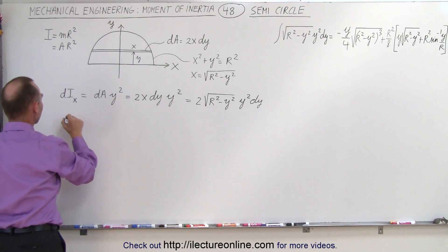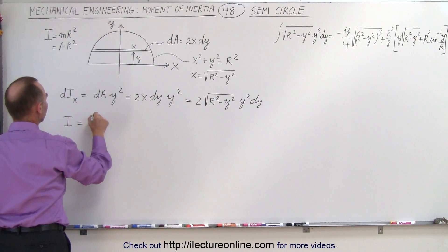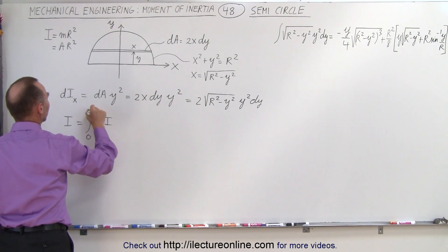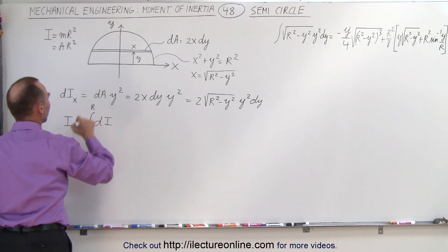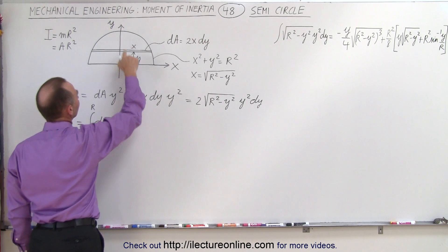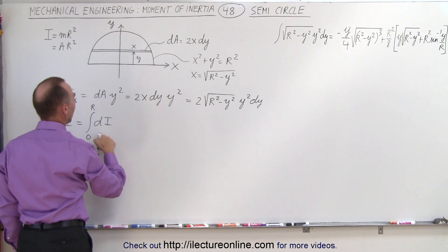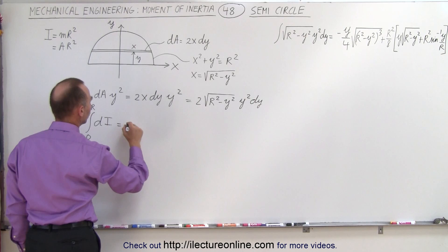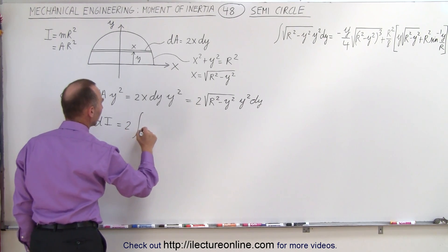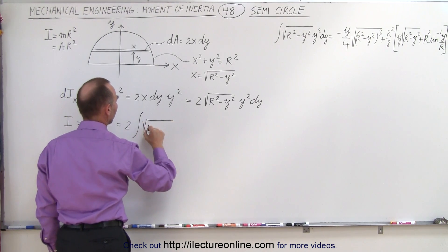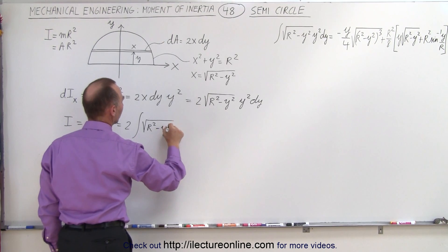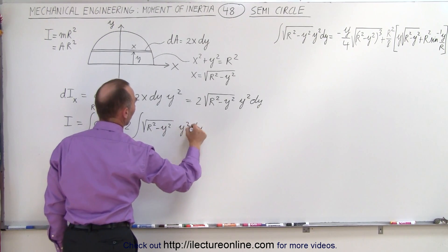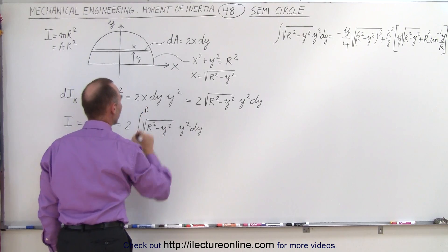Now we can integrate: I is going to be equal to the sum of all the little dI's from y equals 0 to y equals r, and that's going to be equal to 2 times the integral of the square root of r² minus y², times y² dy, from y equals 0 to y equals r.